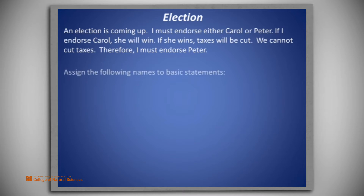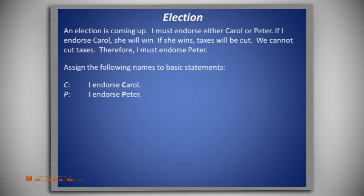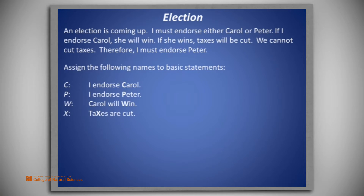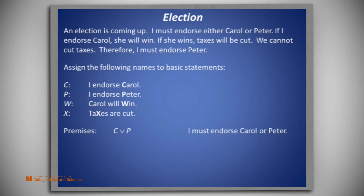We begin by assigning these names to the basic statements. C represents 'I endorse Carol.' P represents 'I endorse Peter.' W represents 'Carol will win.' From the story, the premises that we extract are C or P — that is, I must endorse Carol or Peter.